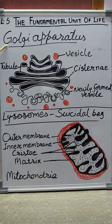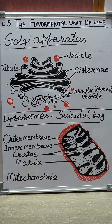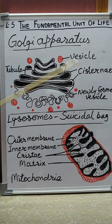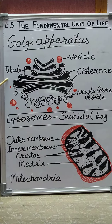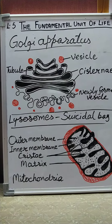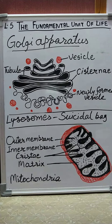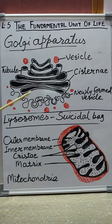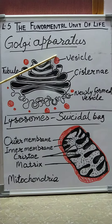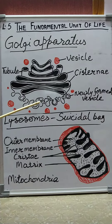The next cell organelle is the Golgi apparatus. It contains vesicles, cisternae, and tubules. The main function of the Golgi apparatus is packaging of material and transport with the help of vesicles. You can see newly formed vesicles over here.